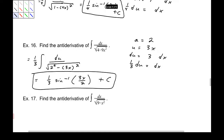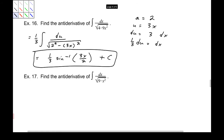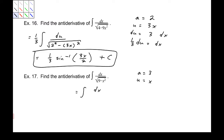Identify what a is, identify what u is. If u is not just x, then we've got to worry about our chain rule. So this one we have a equals 3, u equals x. We don't actually have to do the whole chain rule idea — we can just say this looks like dx over the square root of 3 squared minus x squared. And since that's in the form of arc sine, the answer is arc sine of u over a plus c.